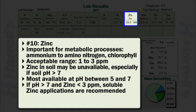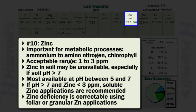Deficiency symptoms of zinc are intravenal chlorosis in both younger and some older leaves. In addition, young leaves appear dwarfed, dark, and desiccated. Zinc deficiency is easily and rapidly correctable using foliar zinc applications, and granular applications can also be effective.